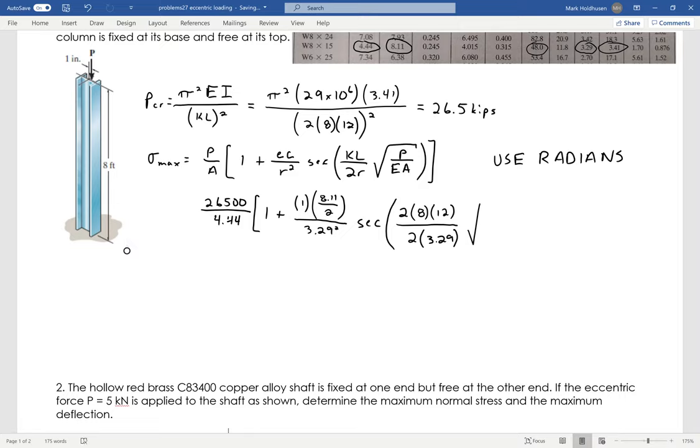Times the square root of P, which is again 26,500, divided by E, which is going to be 29 times 10 to the 6th, times A, again 4.44.